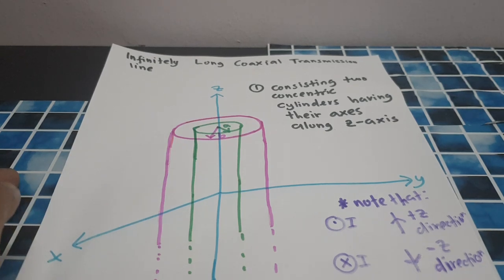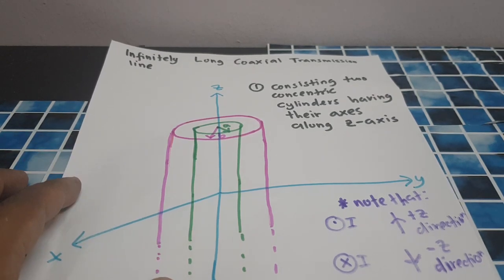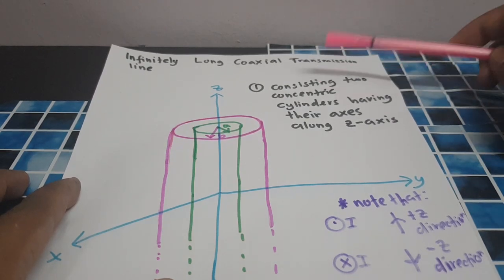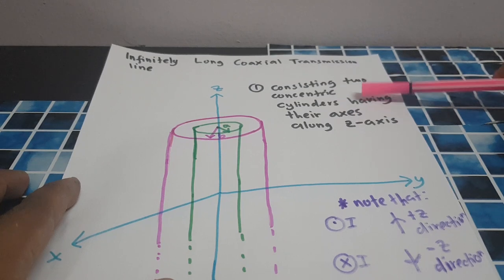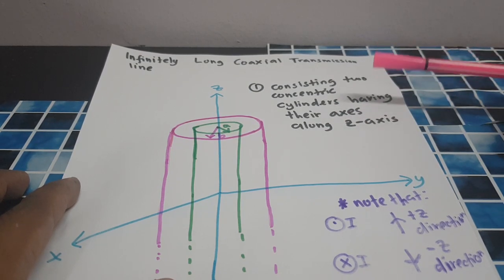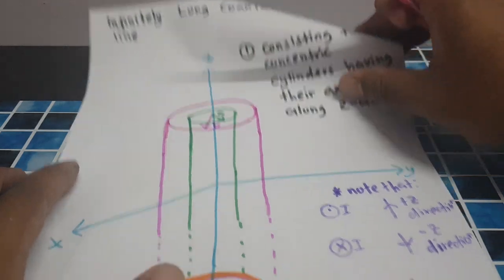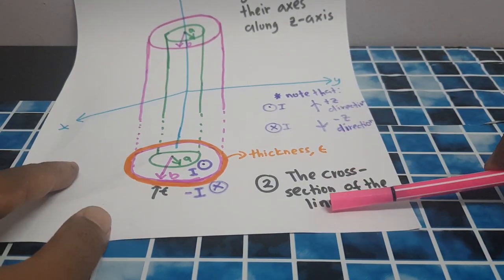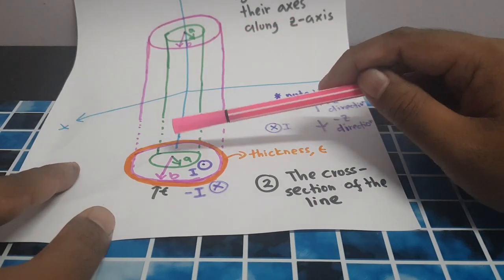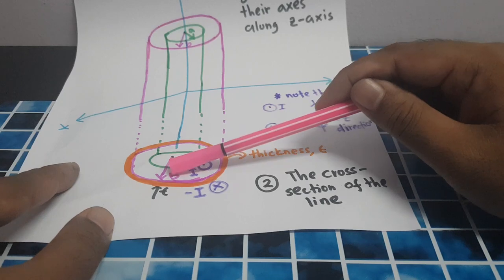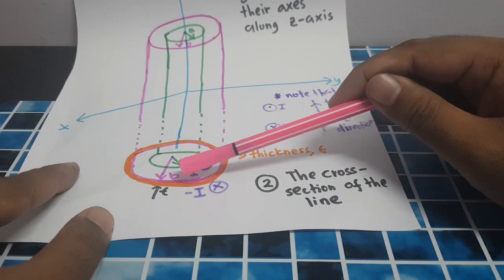Hello everyone. Today we learn about the Ampere's Law application for an infinitely long coaxial transmission line. The coaxial line consists of two concentric cylinders with their axis along the z-axis. From the cross section, we can see that the inner cylinder has radius A, the outer cylinder has radius B, and the thickness is T.